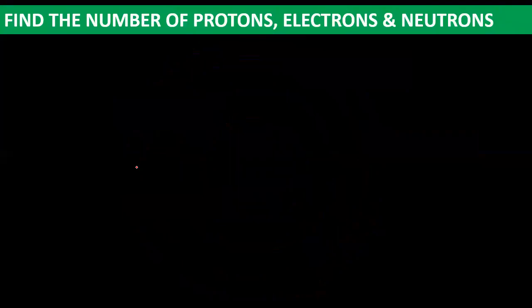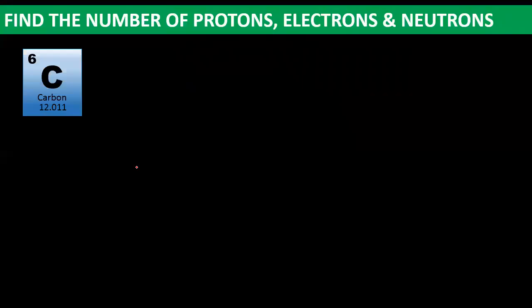Let's find the number of protons, electrons, and neutrons. For example, element carbon — one atom of carbon. The atomic number of carbon is 6, shown in the upper left corner. The letter C is the symbol for carbon, and the atomic mass is 12.011. For this computation, we'll consider the atomic mass as 12. The number of protons is equal to the atomic number, so carbon has 6 protons.